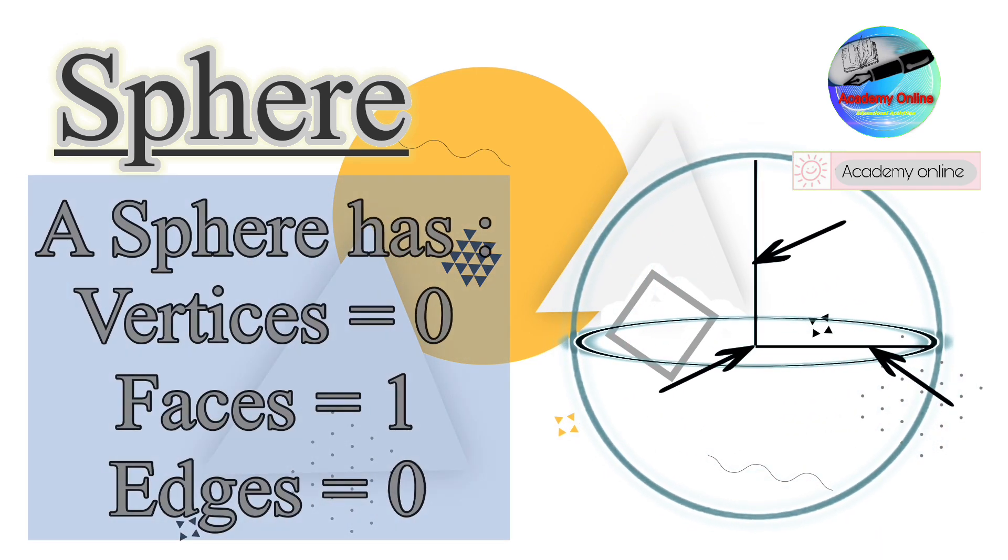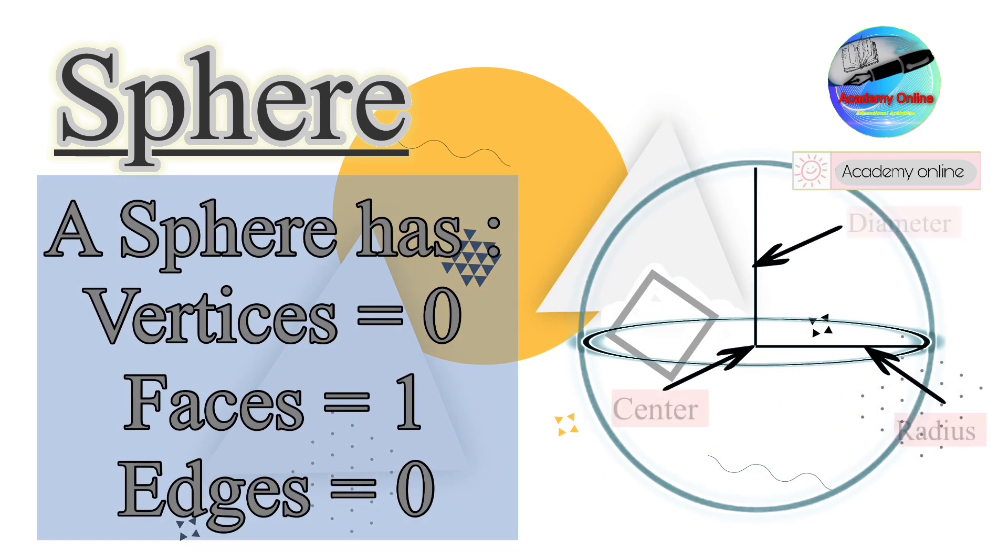A sphere has zero vertices, one face, and zero edges.